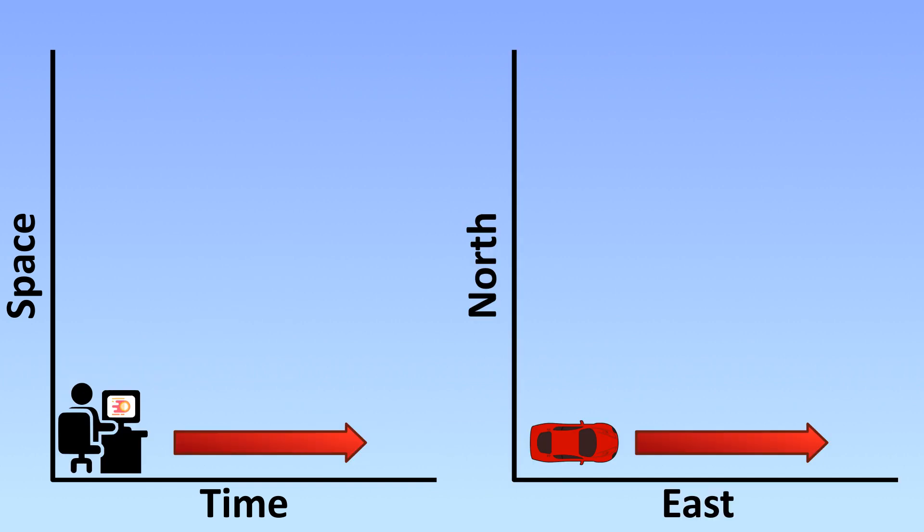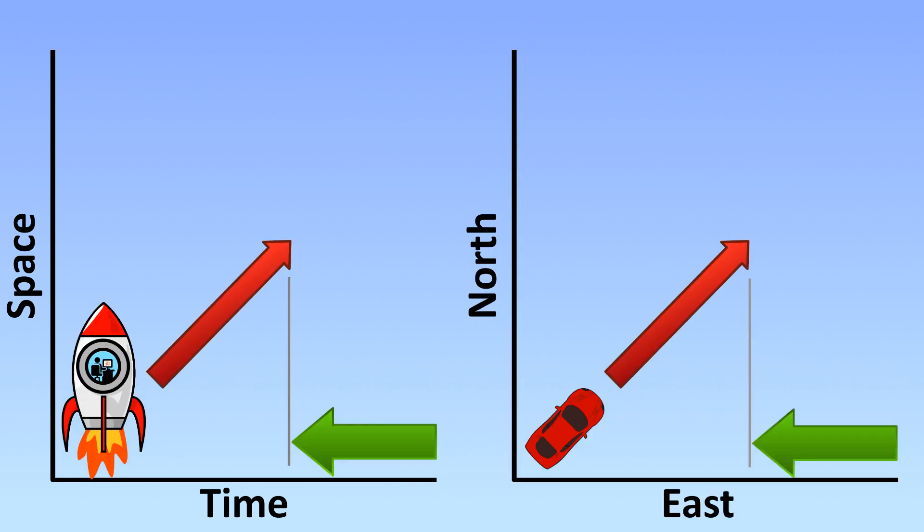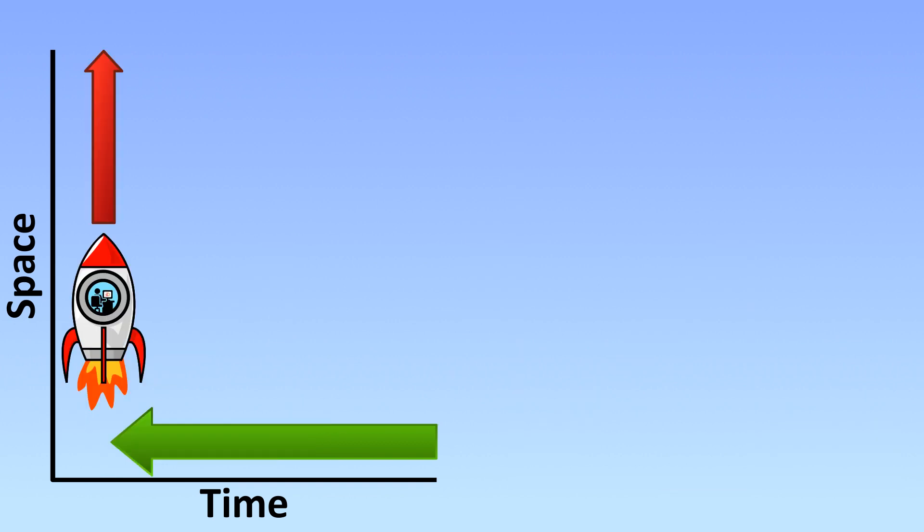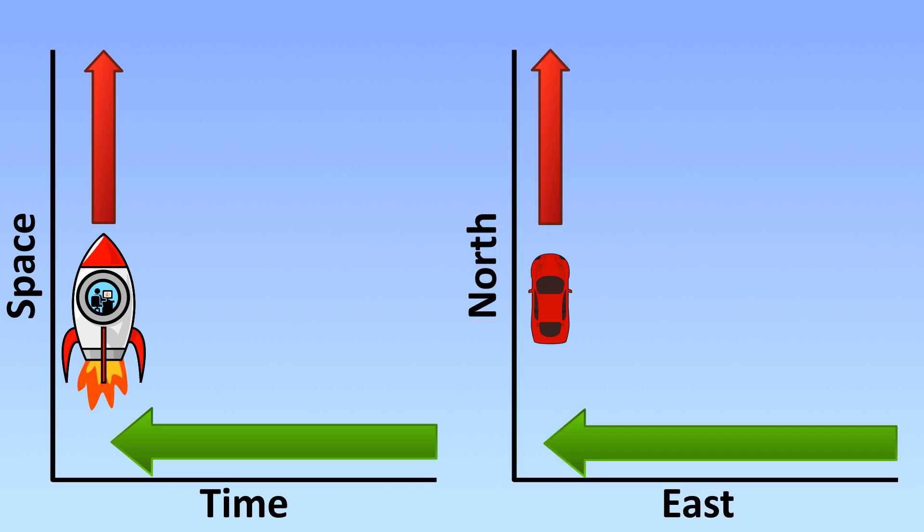As we put more of our direction into speed in the form of acceleration, we start to take away the amount available to time. Like our car analogy, if we start to go north, it will take longer to go east. If we start to accelerate to almost the speed of light, we have so much direction going into space that we have almost none of it going into time. This is like a car going directly north. While it's doing that, we're no longer going east.